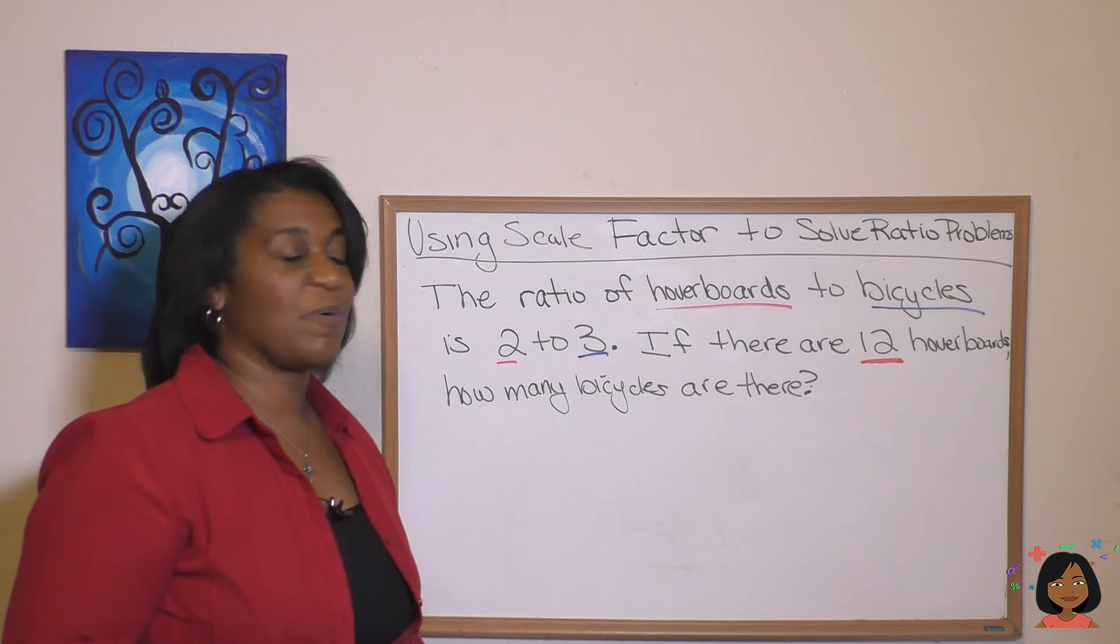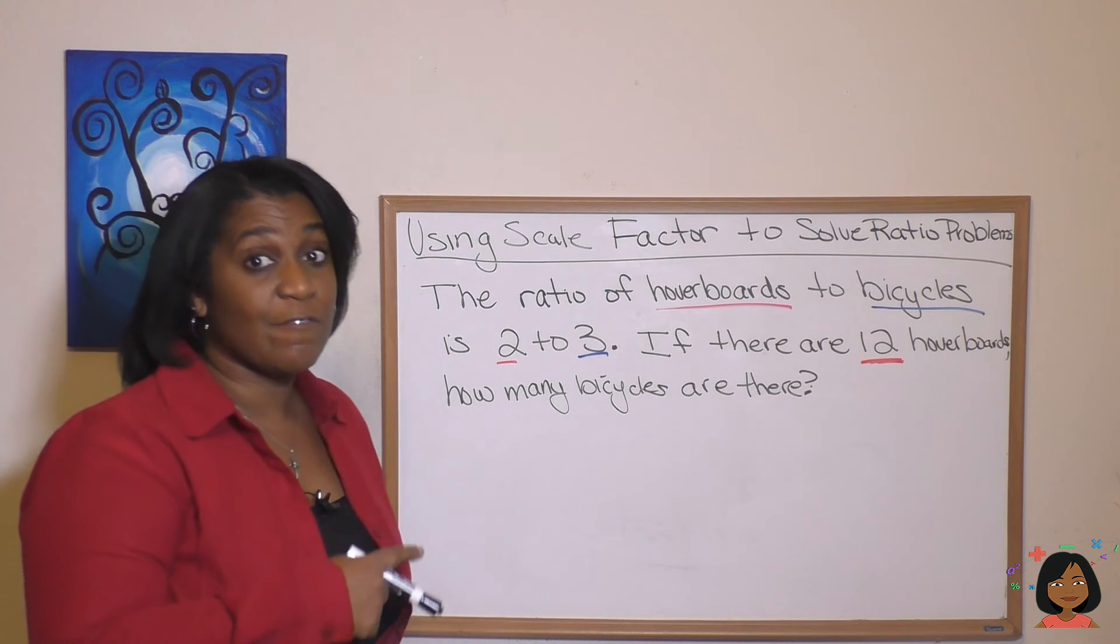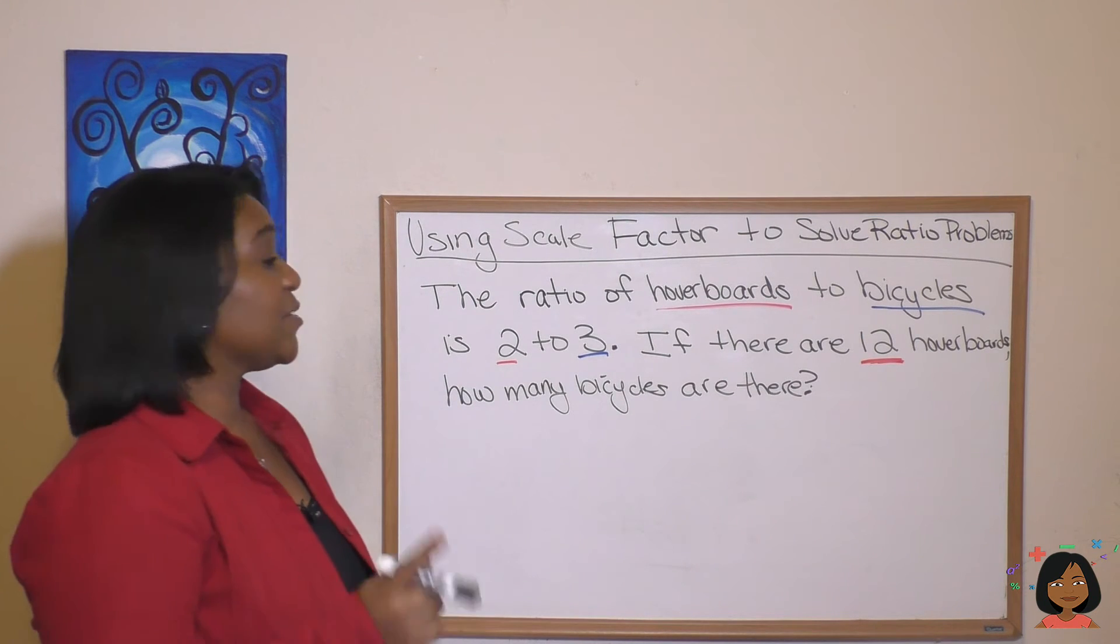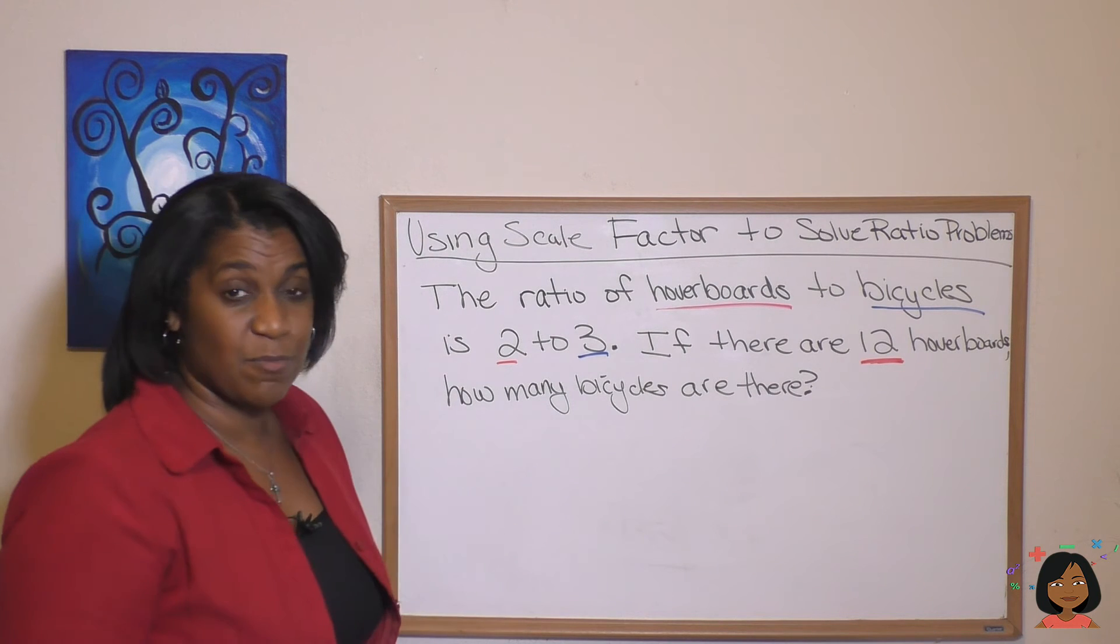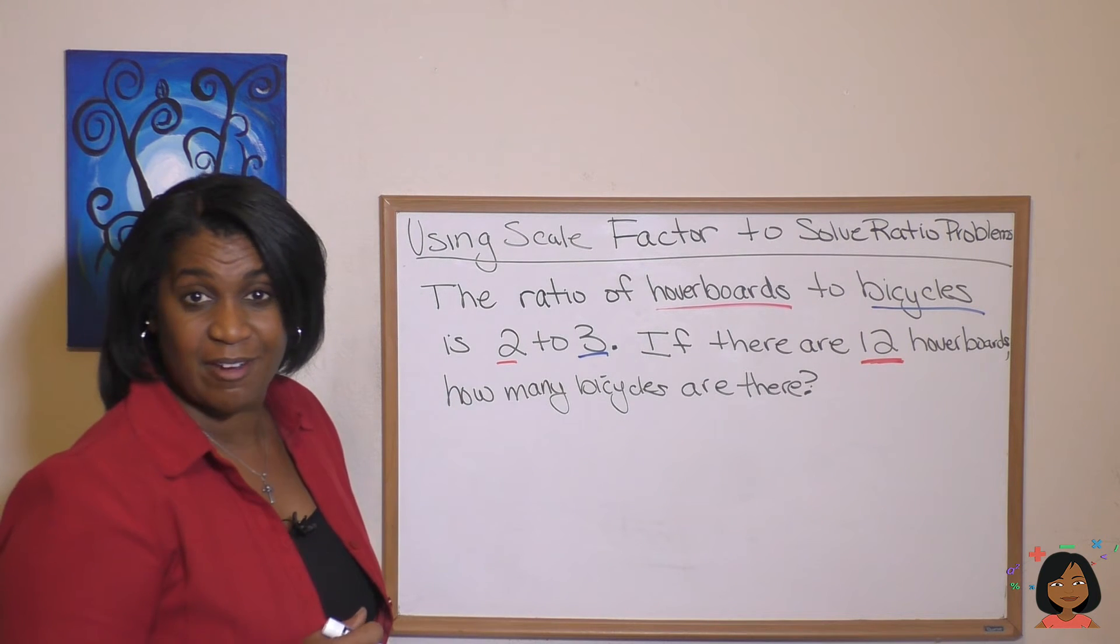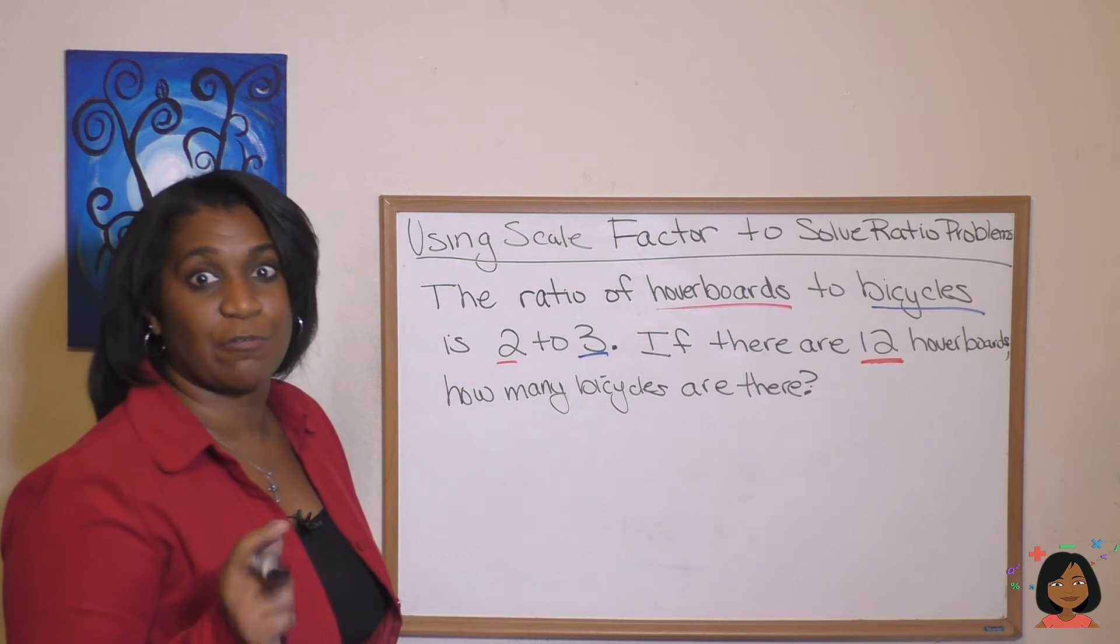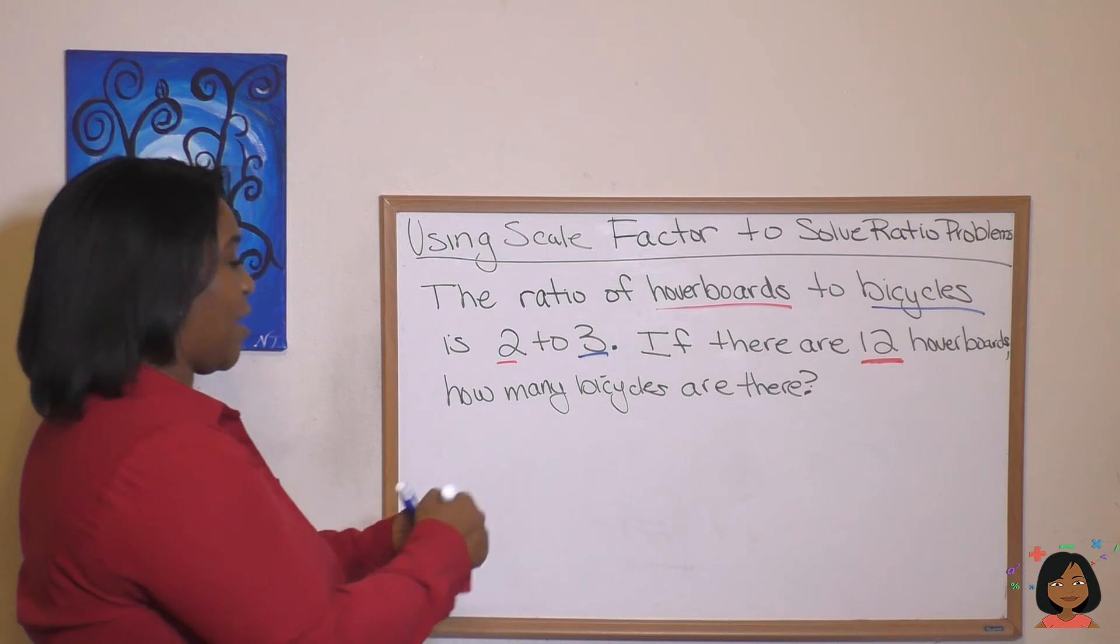Here's another example. The ratio of hoverboards to bicycles is two to three. If there are 12 hoverboards, how many bicycles are there? Sounds like a problem where a ratio box would be a good thing.